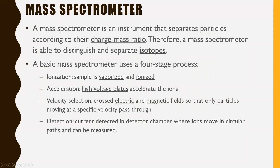A mass spectrometer is an instrument that separates particles according to their charge-to-mass ratio. Therefore, a mass spectrometer is able to distinguish and separate isotopes, because isotopes have different amounts of neutrons. Neutrons add nothing to the charge, but they do add to the mass, which changes the charge-to-mass ratio of a particle. A basic mass spectrometer uses a four-stage process.